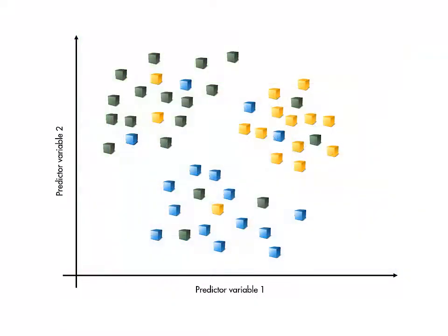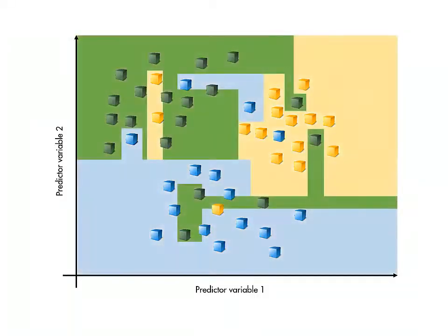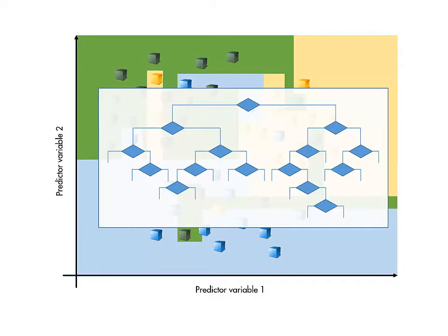As always, realistic data will have noise. Theoretically, a sufficiently complex tree could fit an arbitrarily complex boundary between points. However, this generally means that the model is overfitting the data.